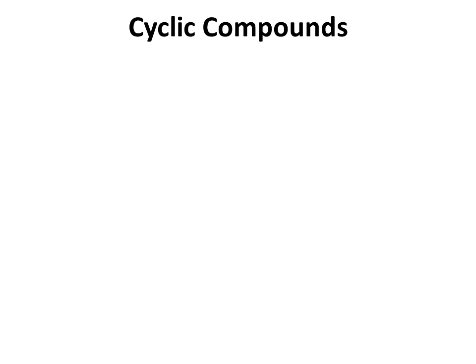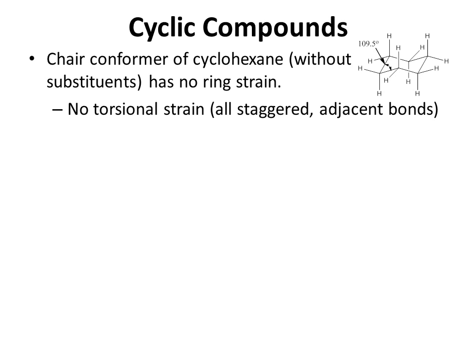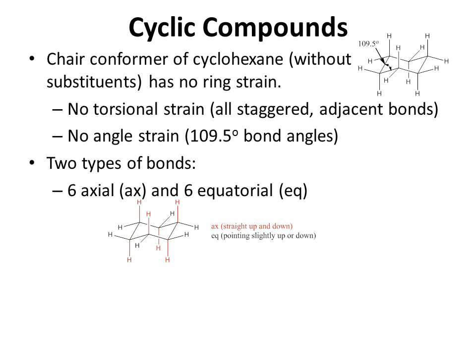Regarding the six-membered ring, it is the chair conformer of cyclohexane, without any substituents, that has no ring strain — no torsional strain, all staggered adjacent bonds, and no angle strain. All bonds inside and around the ring are at 109.5 degrees, the perfect bond angle for sp3 hybridized carbon. There are two types of bonds on chair cyclohexane: six axial bonds that go straight up and down, abbreviated ax, and six equatorial bonds that go out to the sides, abbreviated eq.